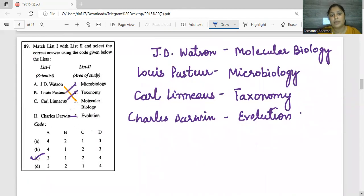Your next question is based upon scientific theories. Which scientists have worked on it? J.D. Watson has told you about molecular biology. Louis Pasteur - we see his microbiology, fermentation, pasteurization. Carl Linnaeus has given us taxonomic hierarchy. In 2016 there was a question on taxonomic hierarchy. Charles Darwin - we have Darwin's evolution theory. According to this, we have the matching, and C will be the correct answer for that.